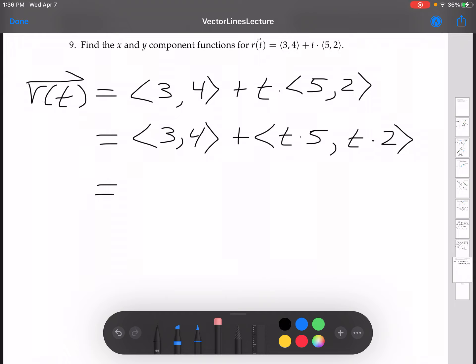Now, normally when we have a variable, for whatever reason, we write the t. So we can write this as 5 times t and 2 times t, instead of t times 5 and t times 2. So this will be 5t and 2t.